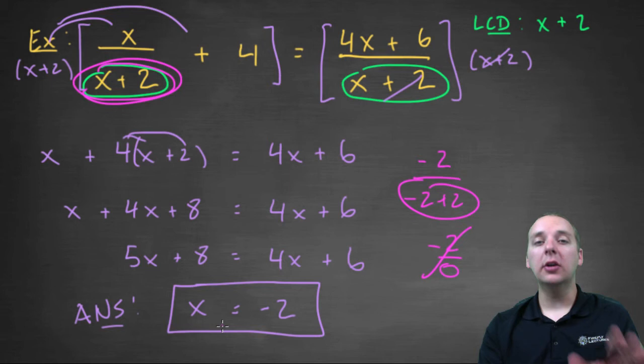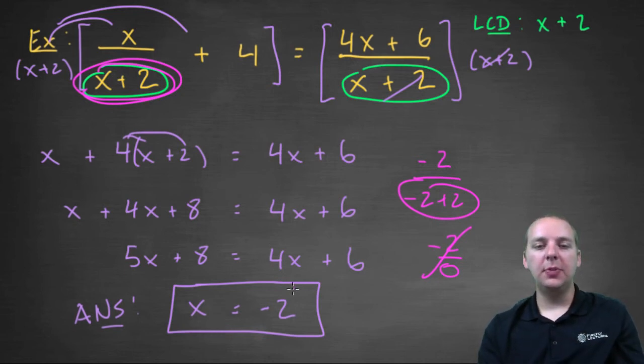So even though this guy looks like a solution, this is actually what we call an extraneous solution. They're kind of rare, we don't see them all the time, but we do see them. Did this mean that we made a mistake somewhere? Did we mess up? Absolutely not. We did not. But this solution did get introduced throughout the process of our algebra.